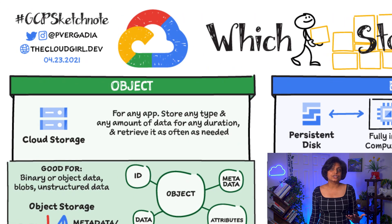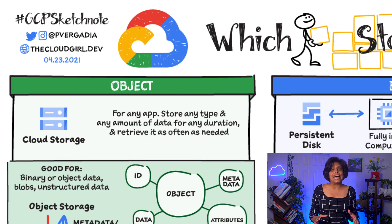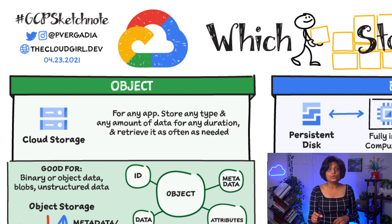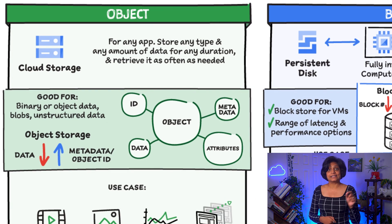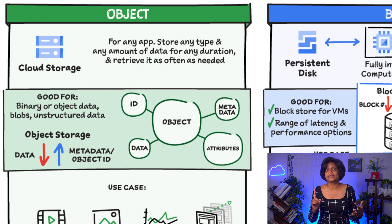Google Cloud Storage is an object store which stores binary and object data, blobs, or unstructured data. You would typically use it for any app, any type of data that you need to store for any amount of time. You can add data to it or retrieve data from it as often as needed. The object store has an ID, metadata, attributes, and the actual data. The metadata could include all sorts of things about security classification of the file, the applications that can access it, and other such things.